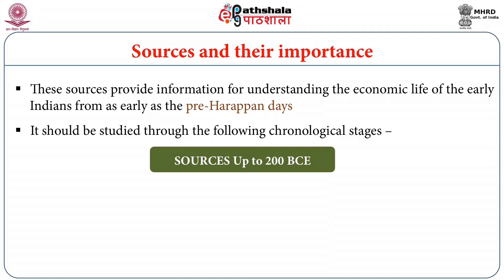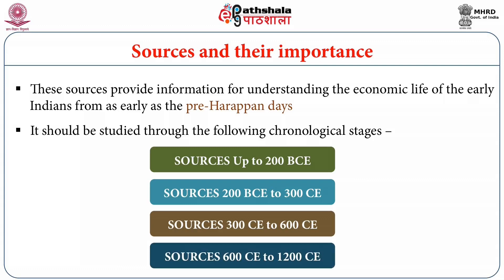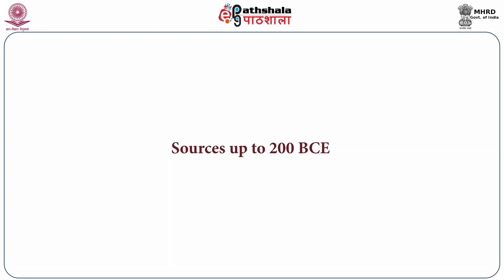The chronological stages are: sources up to 200 BCE; sources 200 BCE to 300 CE; sources 300 CE to 600 CE; and sources 600 CE to 1200 CE. Let us now go to sources up to 200 BCE and see how these are important — the third major point of how these sources help us know the economic history of early India.